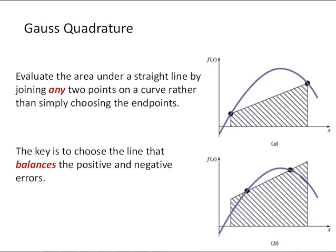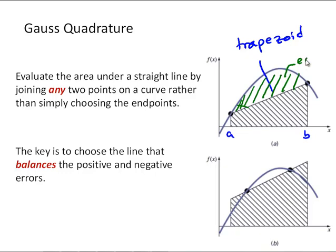Here's the basic idea of Gauss quadrature. For the trapezoid method, recall, we used the endpoints of the integration range a to b to evaluate the integral of the function, and we got an error proportional to the curvature of the function as well as the cube of the range. The basic idea of Gauss quadrature is to evaluate the area by joining any two points on a curve rather than simply choosing the endpoints, and to strategically choose the line so that the positive and negative errors are balanced.